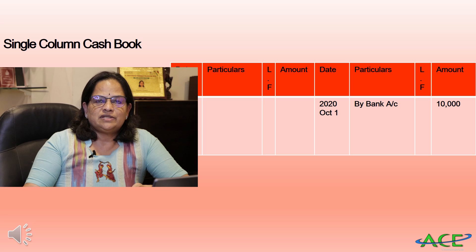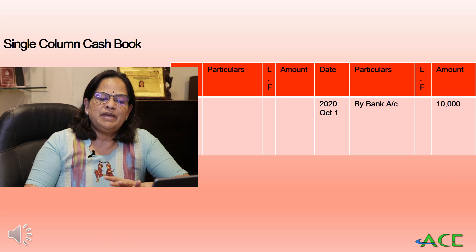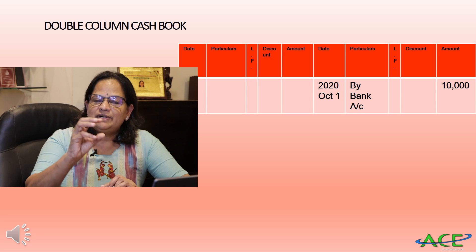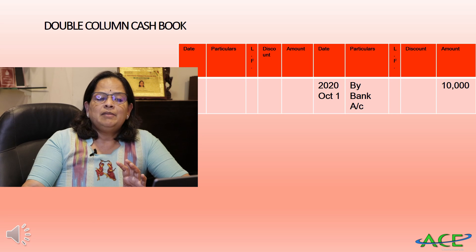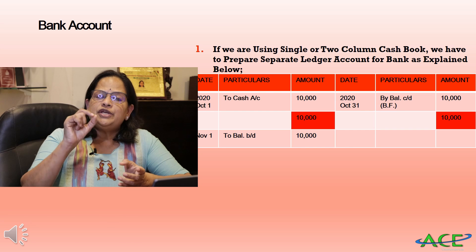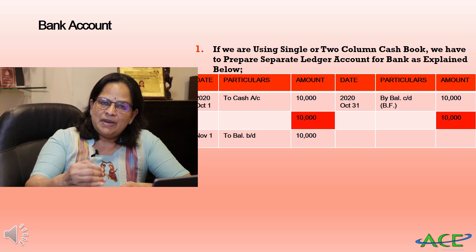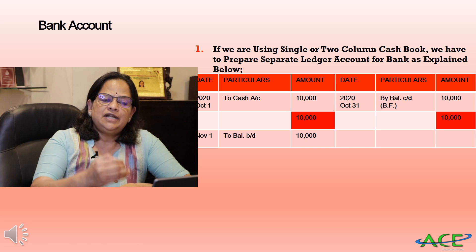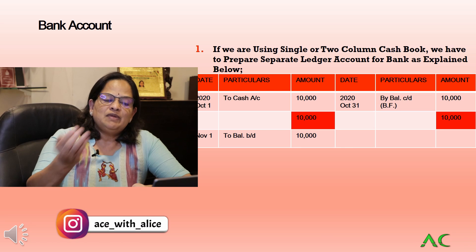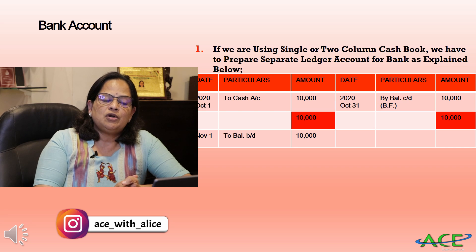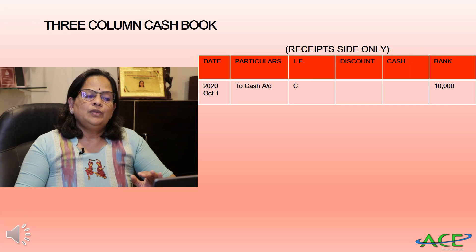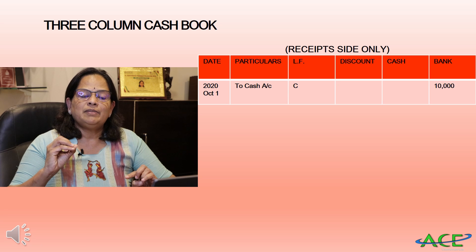In double column cash book, 'By Bank' 10,000 goes in the amount column — the discount column has no entry. The problem with single column and double column cash books is that you have to prepare a separate bank account. In that separate bank account, on the debit side we write 'To Cash Account 10,000' and carry the balance forward. Now when preparing a three column cash book, the debit and credit sides each have cash, bank, and discount columns.